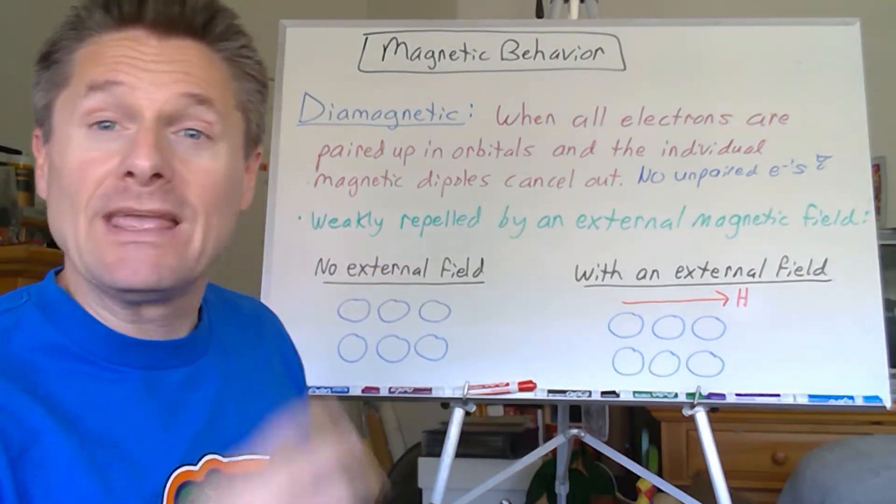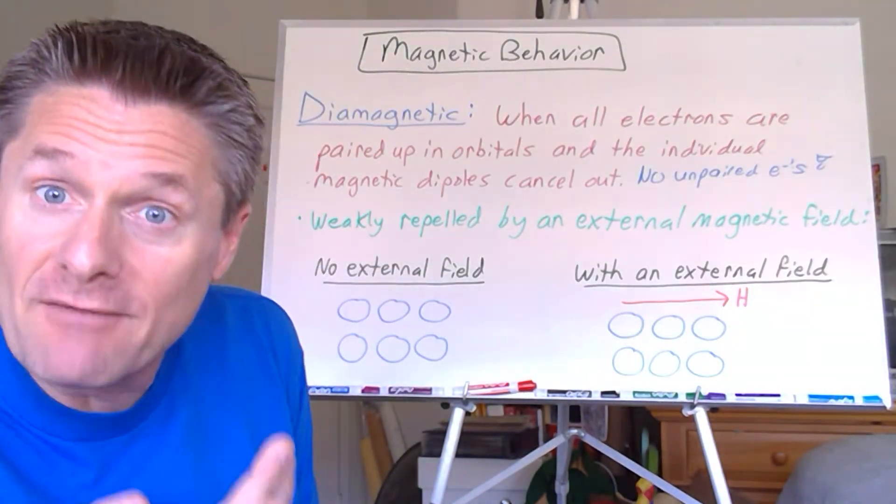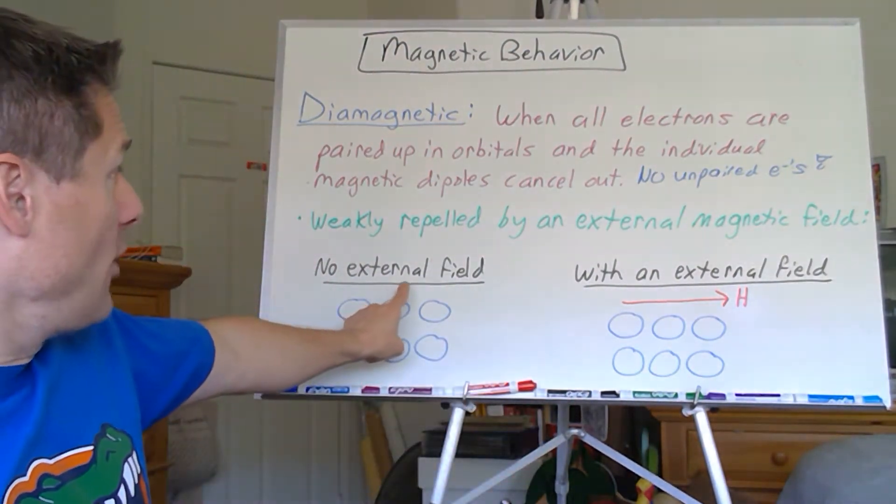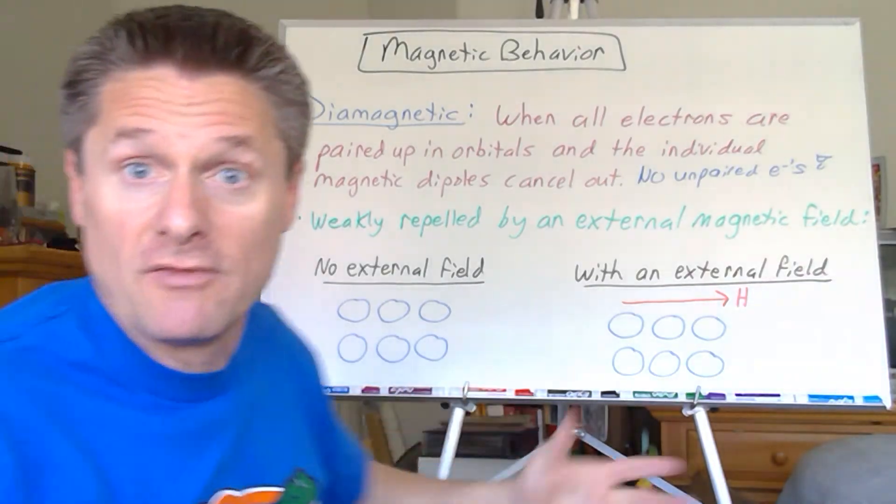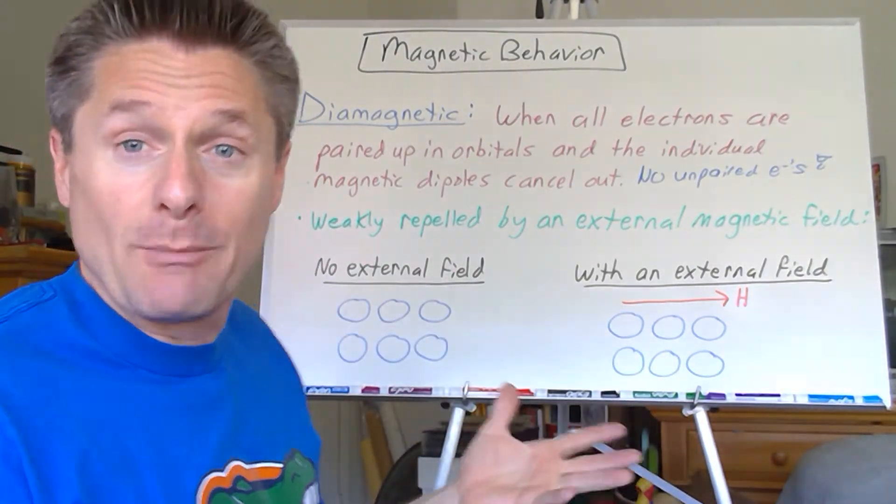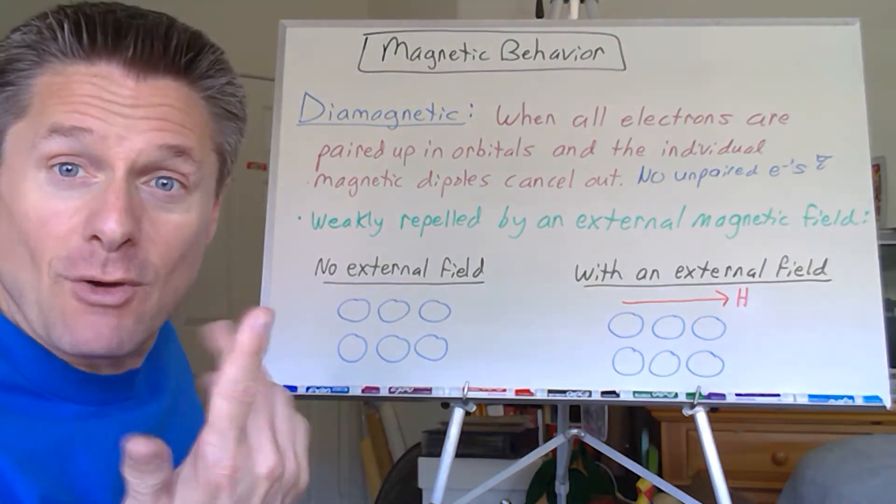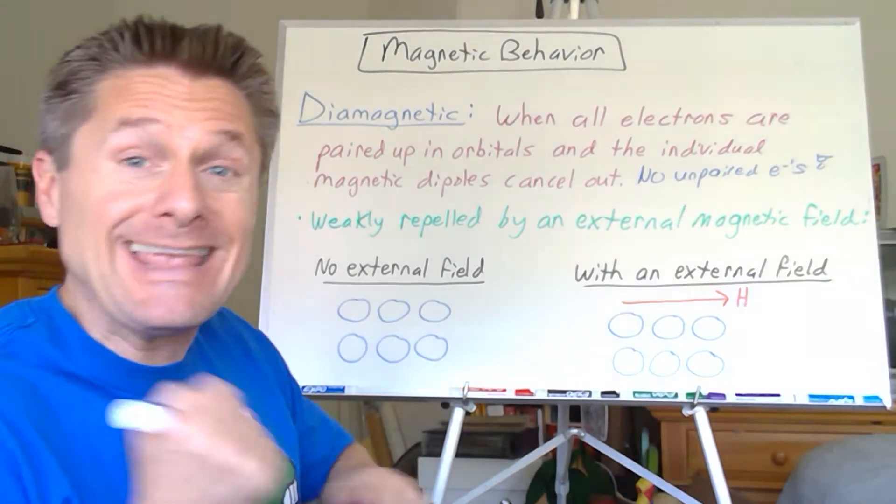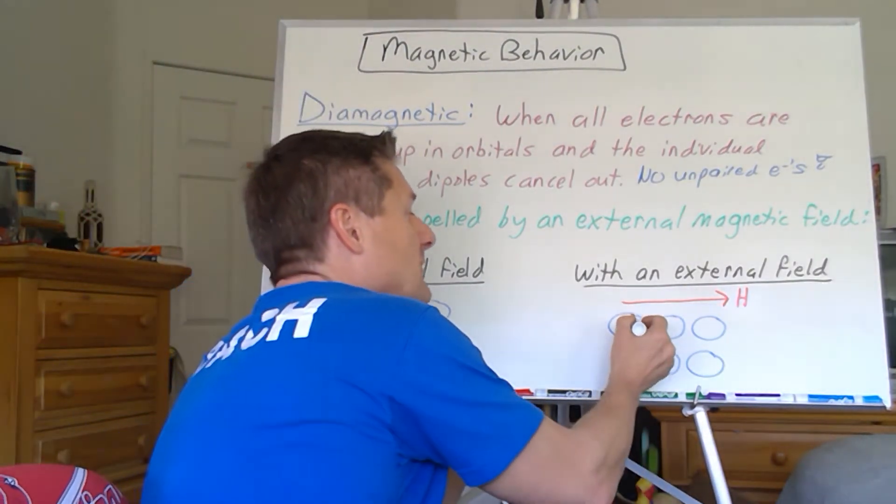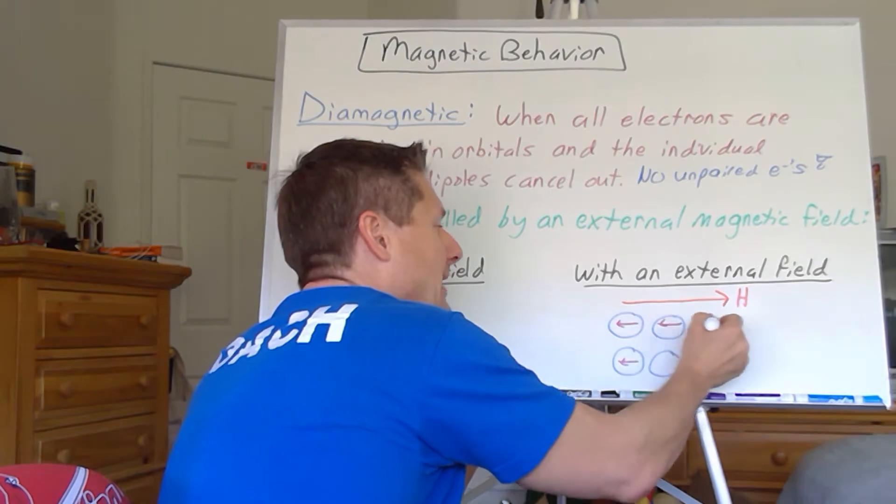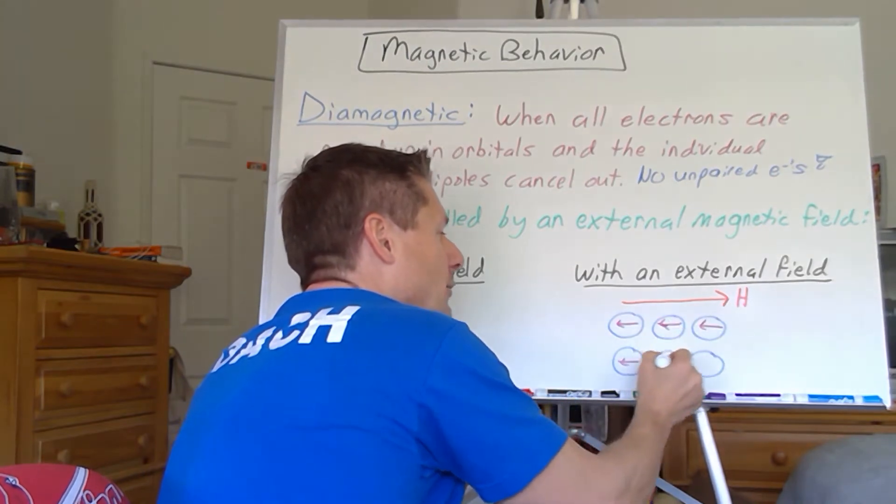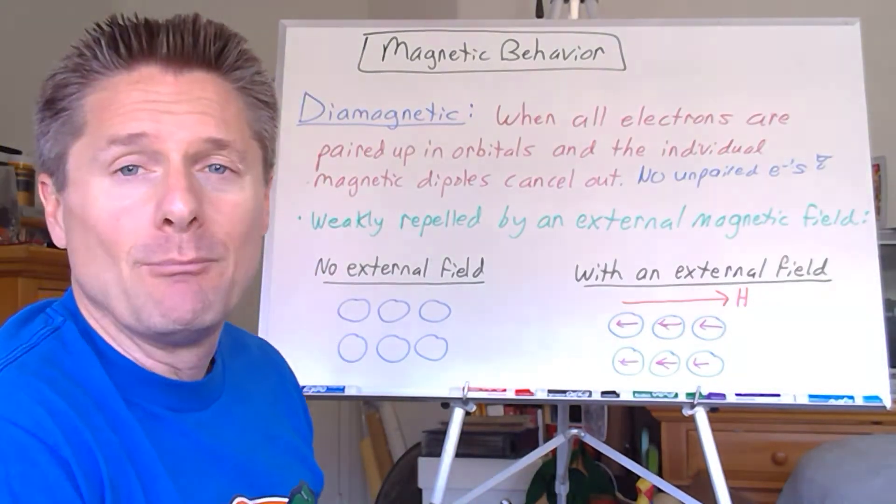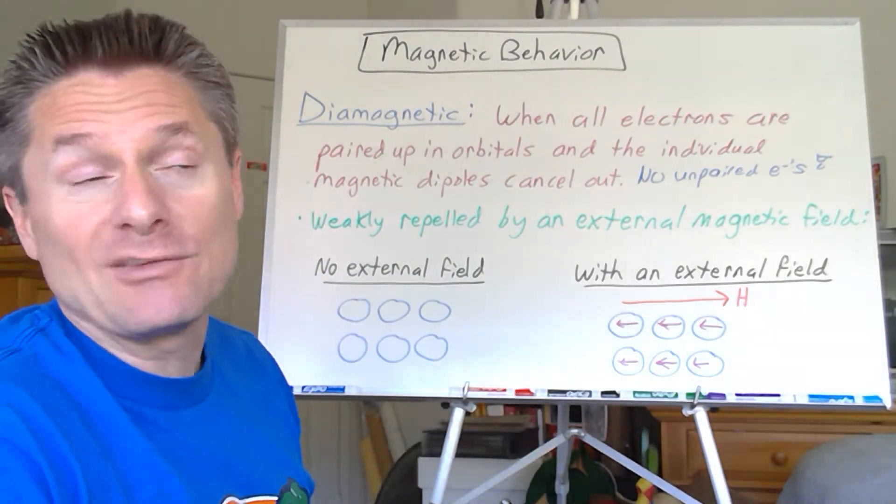Diamagnetic is actually weakly repelled by an external magnetic field. When it's paramagnetic, they all line up with the external magnetic field. When you have no external field with diamagnetic substances, there are no individual electron magnetic spins, they're all canceled out. But if I put a diamagnetic substance in an external magnetic field, it's repelled by it. You actually get these things lined up opposite, weakly repelled.